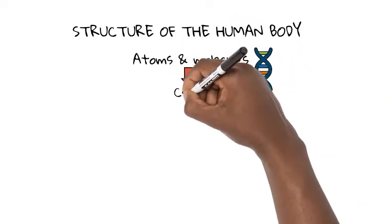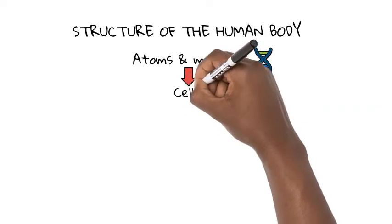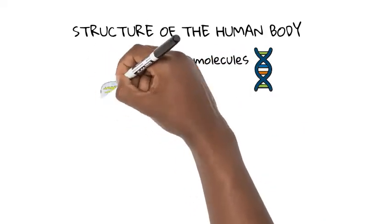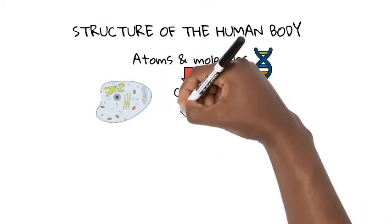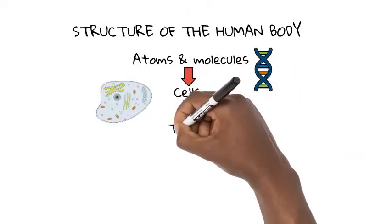Second, there are cells. Molecules like DNA are stored in units called cells, which are responsible for specific functions in the body. There are 75 trillion cells in the body.